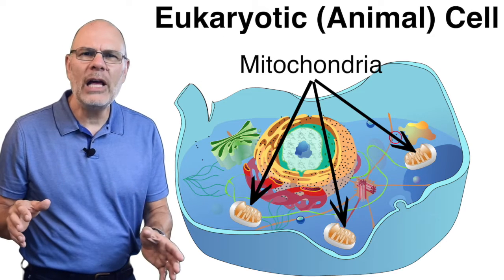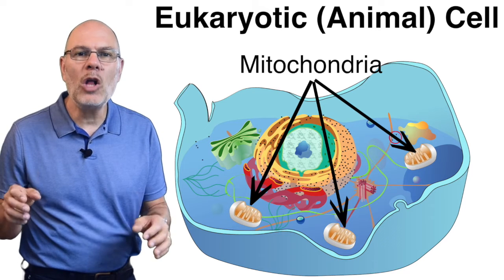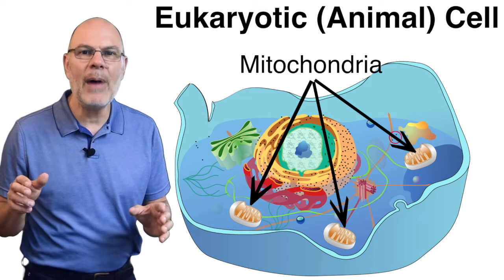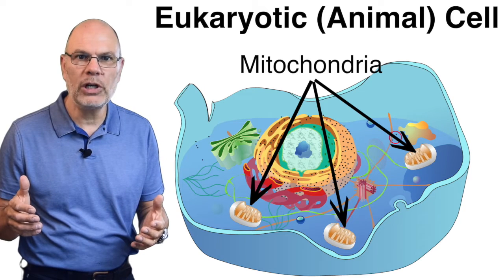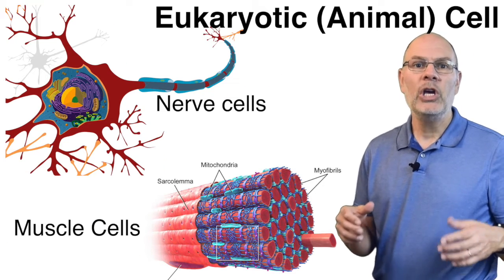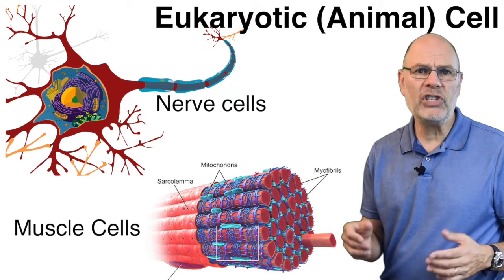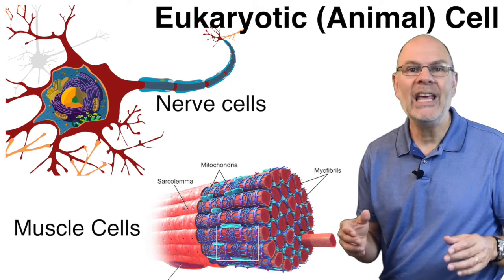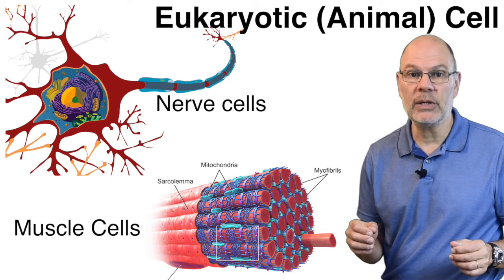There are organelles called mitochondria, and they make almost all of a eukaryotic cell's ATP, the key molecule that cells use to get work done. In multicellular eukaryotes, you also have cell specialization — nerve cells, muscle cells, and so on — each playing a specialized role in the organism.